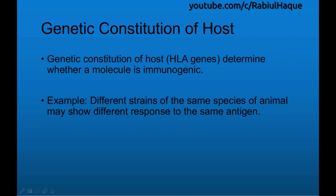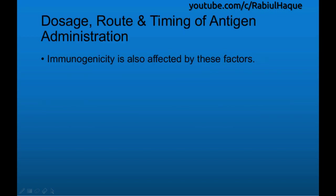The next feature is regarding the genetic constitution of host. The genetic constitution of host, particularly the HLA genes, can determine whether a molecule is immunogenic or not. For example, different strains of the same species of animal may show different responses to the same antigen. Similarly, dosage, route and timing of antigen administration may also affect immunogenicity.